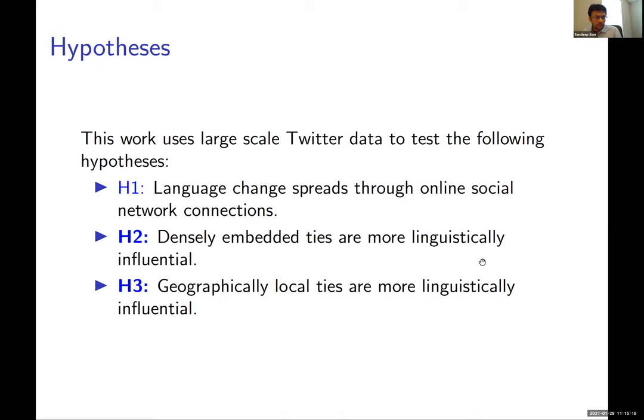The second and third hypotheses ask whether strong ties or densely embedded ties are more linguistically influential — acting as better channels for the spread of new words — and similarly whether local ties are more linguistically influential. For this talk, I'll focus on testing the second and third hypotheses; you can check the paper to see how we test the first.